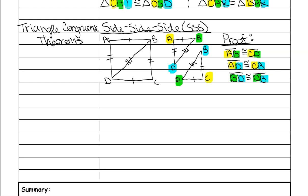Since all three sides are congruent, it means both triangles are completely congruent, which also means all the angles are congruent — the yellow angles, the green angles, and the blue angles are all congruent to each other. Once you know a triangle is SSS, everything in one triangle is congruent to the corresponding part in the other.